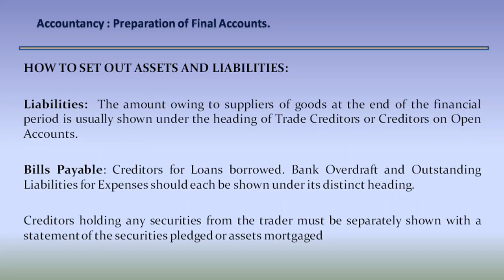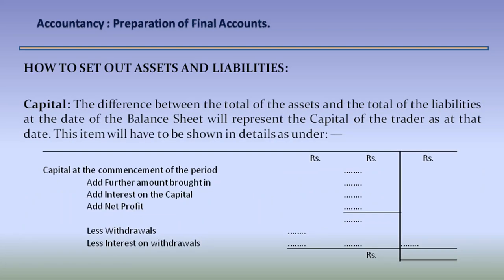Liabilities: the amount owing to suppliers of goods at the end of the financial period is usually shown under the heading of trade creditors or creditors on open accounts. Bills payable, creditors for loans borrowed, bank overdraft, and outstanding liabilities for expenses should each be shown under its distinct heading. Creditors holding any securities from the trader must be separately shown with a statement of the securities pledged or assets mortgaged.